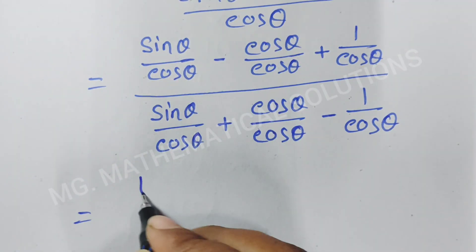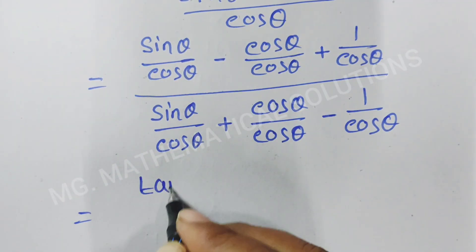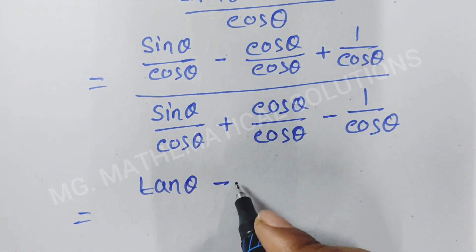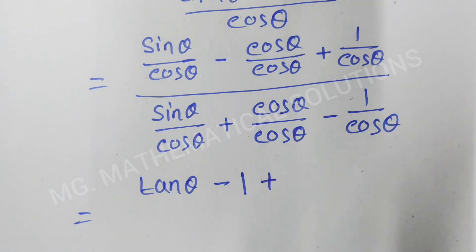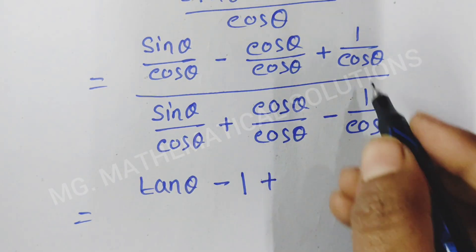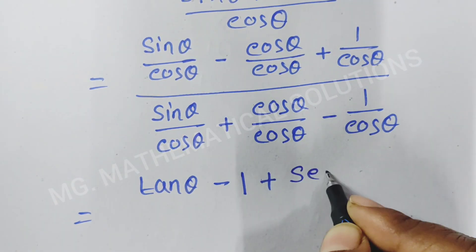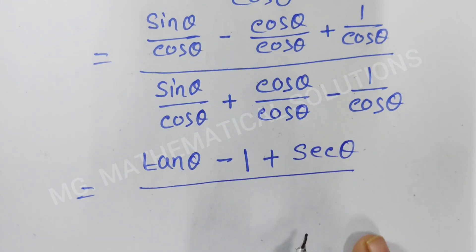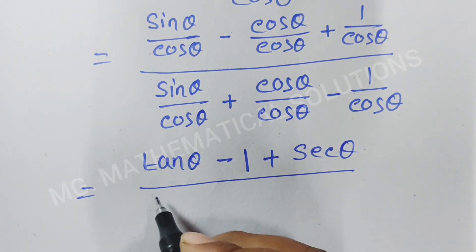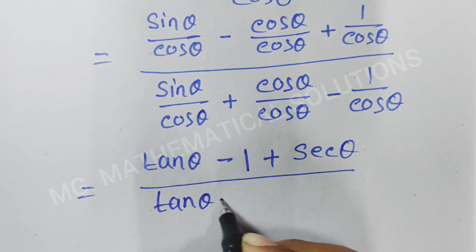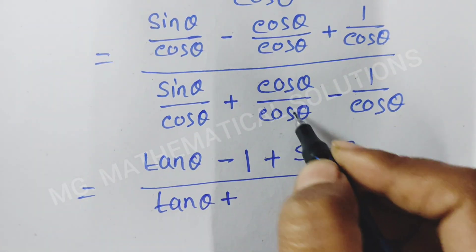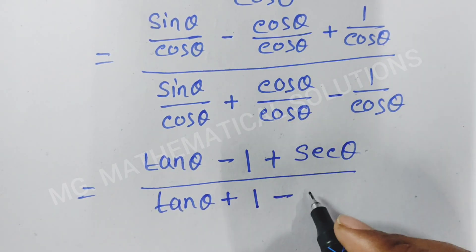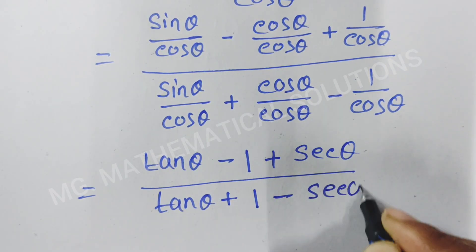Sin θ by cos θ means tan θ; cos θ by cos θ is 1; and 1 by cos θ means sec θ. So the numerator becomes tan θ minus 1 plus sec θ, and the denominator becomes tan θ plus 1 minus sec θ.